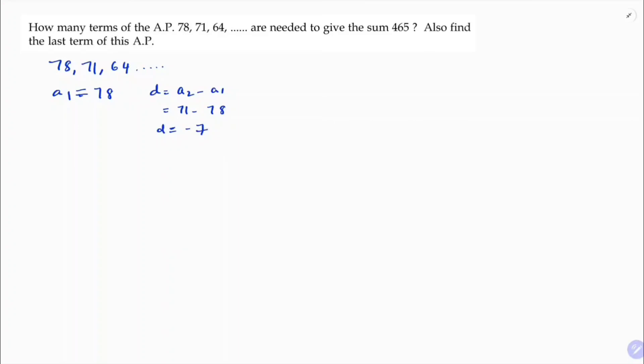Now they are saying how many terms are needed to give the sum 465. So here sum is given as 465. Now sum of n terms formula is n by 2 into 2A plus n minus 1 into D equals 465. This is the formula for sum of n terms.